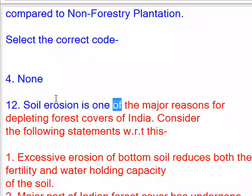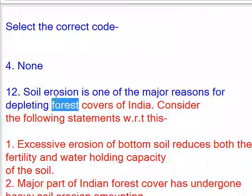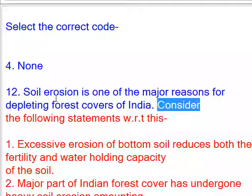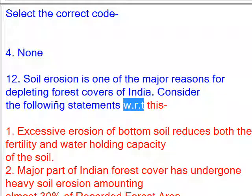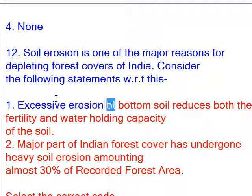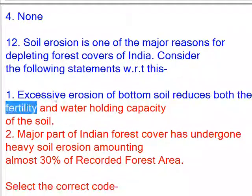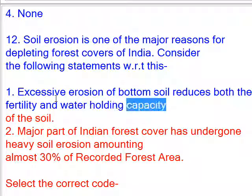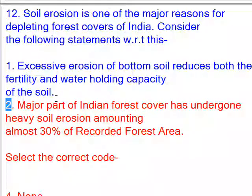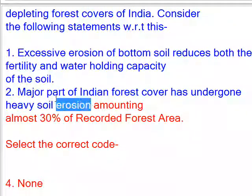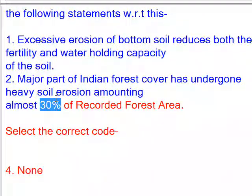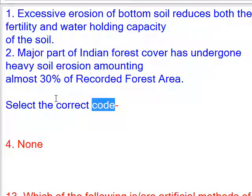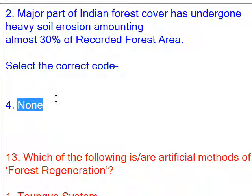Soil erosion is one of the major reasons for depleting forest cover of India. Consider the following statements: 1. Excessive erosion of bottom soil reduces both the fertility and water holding capacity of the soil. 2. Major part of Indian forest cover has undergone heavy soil erosion amounting to almost 30% of recorded forest area. Select the correct code. Answer: None.